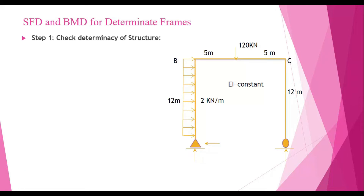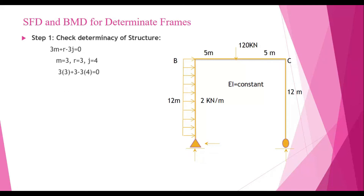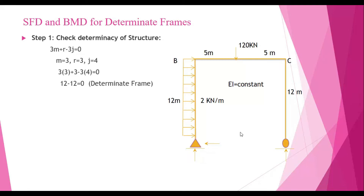Step one is to check the determinacy of the structure. We apply the equation 3m + r - 3j = 0. There are three members and three reactions: two hinge reactions and one vertical reaction from the roller support. The number of joints j is equal to 4. Substituting these values, the result equals zero, so the structure is statically determinate.